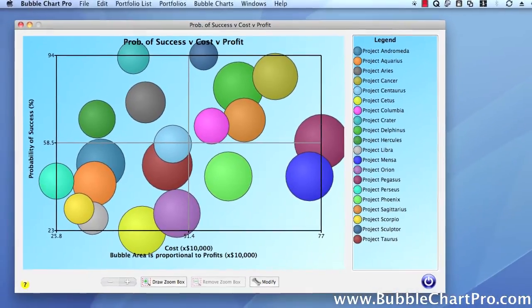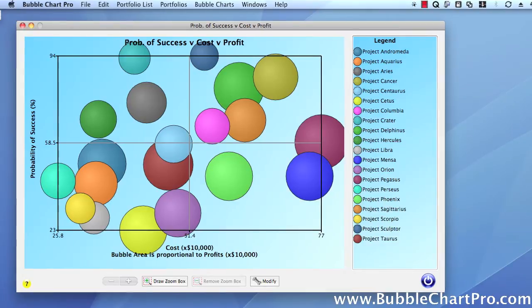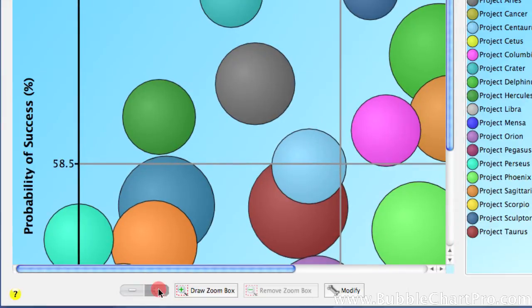Sometimes, bubble charts can get pretty crowded, and you may want to look at a particular area of a chart. There are a couple ways that you can do this in Bubble Chart Pro. First, you can simply use the zoom magnification buttons at the bottom of the chart to zoom in and out of the chart. These buttons simply magnify the graphic.